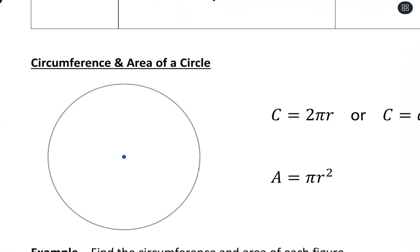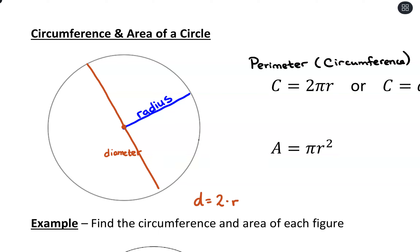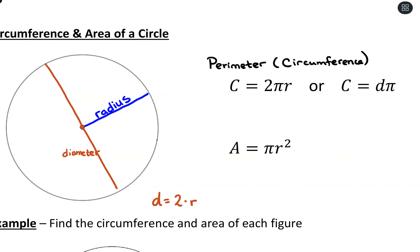Now let's talk about circles. The perimeter of a circle has the special name circumference. With a circle, the radius goes from the center to the outside, and the diameter is the line that goes straight across through the center — the diameter equals two times the radius. To calculate circumference, you use either two pi r or diameter times pi. For area, we take pi r squared.